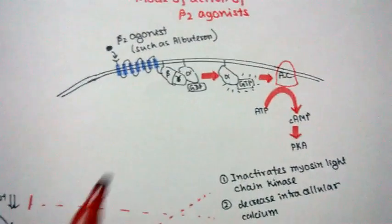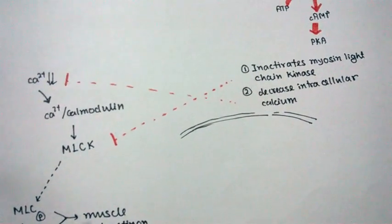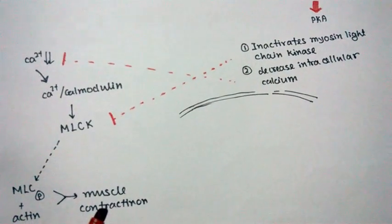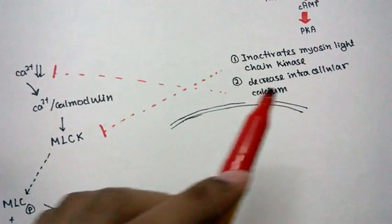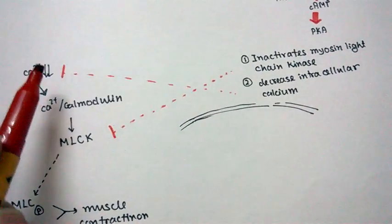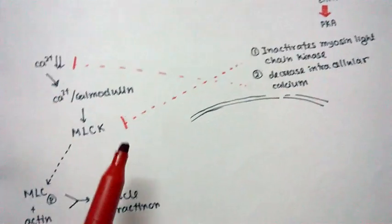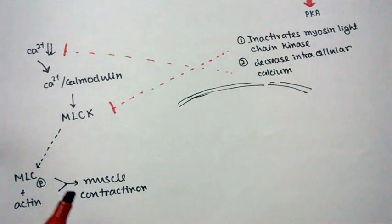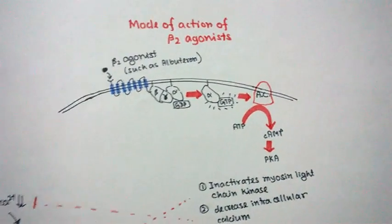Thus, beta-2 agonist-mediated signaling prevents muscle contraction, and ultimately it imparts the effect of bronchodilation. It also decreases the calcium level, indirectly inhibiting muscle contraction. In this way, beta-2 agonists such as albuterone impart their effect by causing bronchodilation.